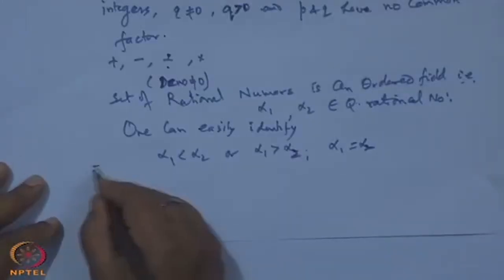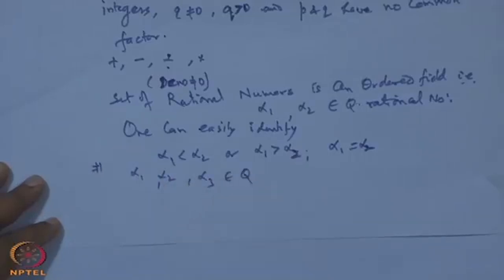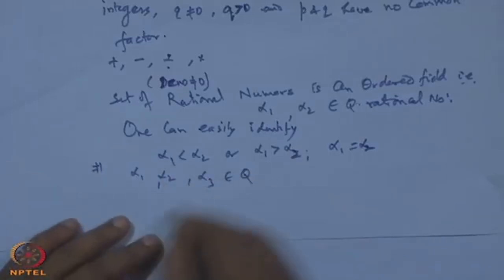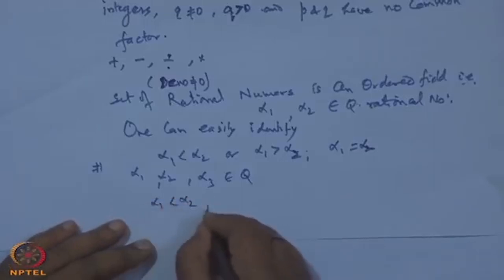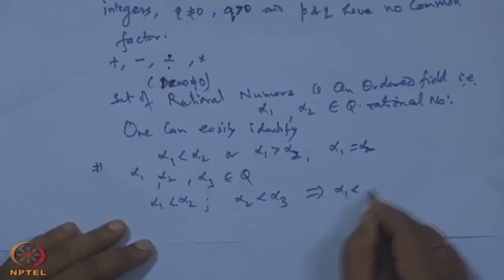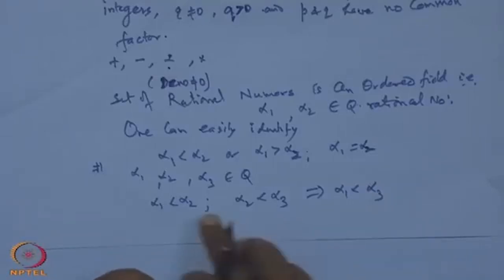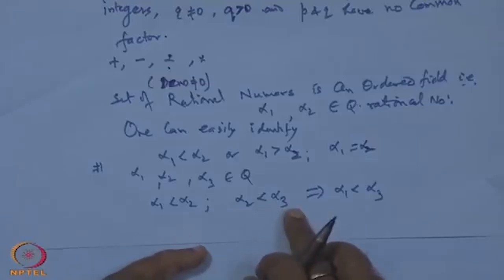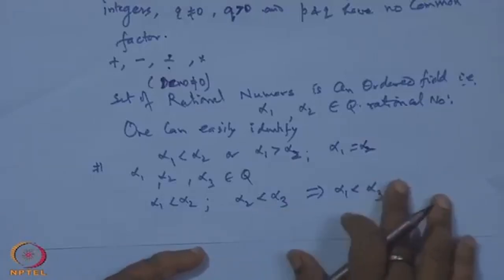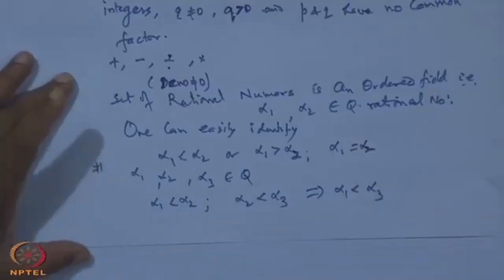Not only that, if there are three rational numbers α₁, α₂, α₃, and if α₁ < α₂ and α₂ < α₃, then one can easily show α₁ < α₃. That is the transitive property — if α₁ < α₂ and α₂ < α₃, then α₁ < α₃.